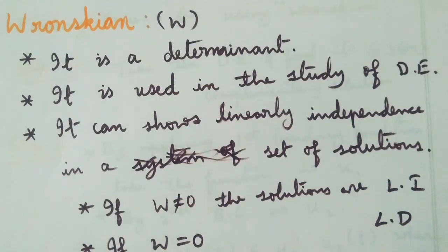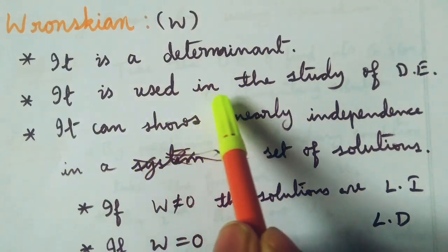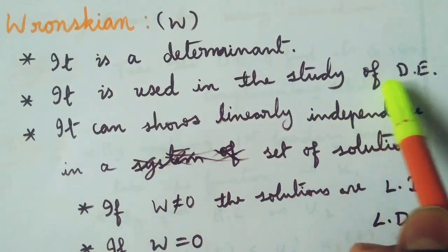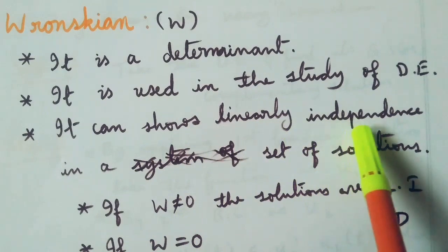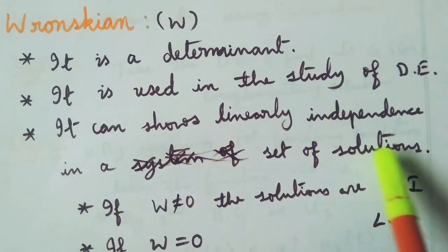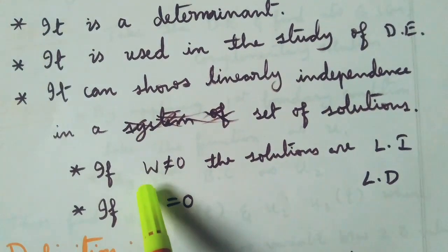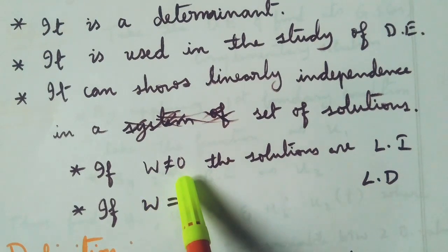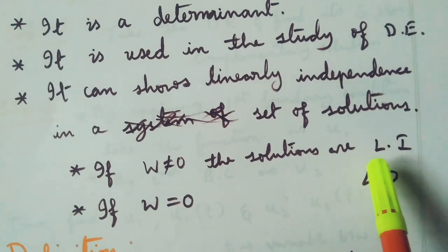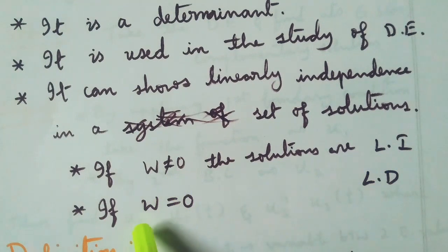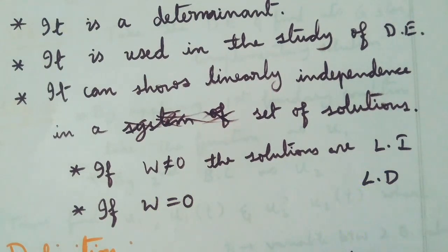First let us see what is Wronskian. It is a determinant used in the study of differential equations. It can show linear independence in a set of solutions. That is, if W is not equal to 0, the solutions are linearly independent. If W is equal to 0, the solutions are linearly dependent.